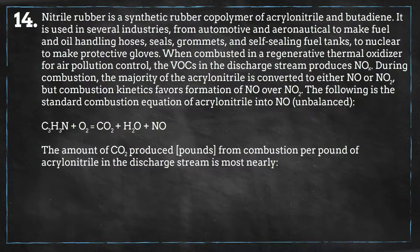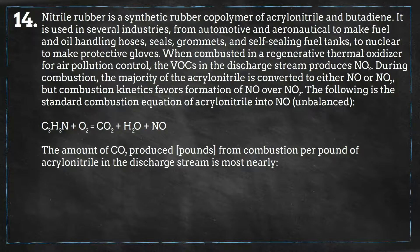Nitrile rubber is a synthetic rubber co-polymer of acrylonitrile and butadiene. It is used in several industries, from automotive and aeronautical to make fuel and oil handling hoses, seals, grommets, and self-sealing fuel tanks, to nuclear applications to make protective gloves.